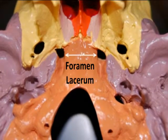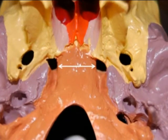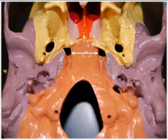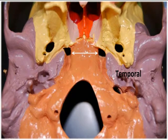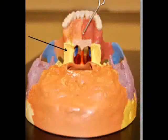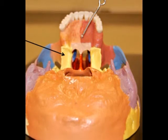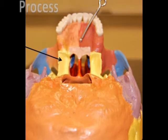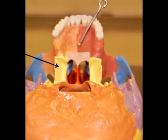Our last foramen is the foramen lacerum. This is not a round hole or an oval opening — it is more of a slash or a tear, a reference to its lacerated appearance. This foramen is sandwiched in between the sphenoid, occipital, and temporal bones, and it allows passage of one of the branches of the ascending pharyngeal artery. Our final bony landmark of the sphenoid bone is the pterygoid processes — the legs of the bat. These project inferiorly from the body and greater wings and form the lateral posterior nasal cavity. They are also the points of attachment for several muscles that move the mandible.